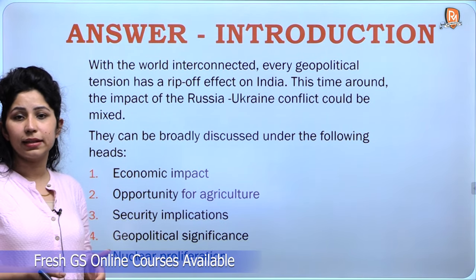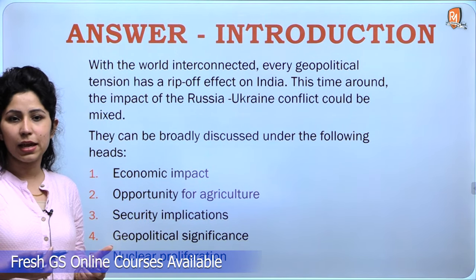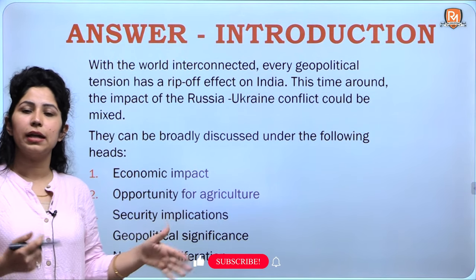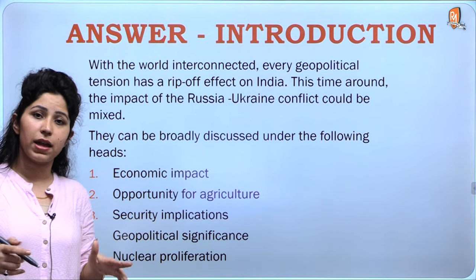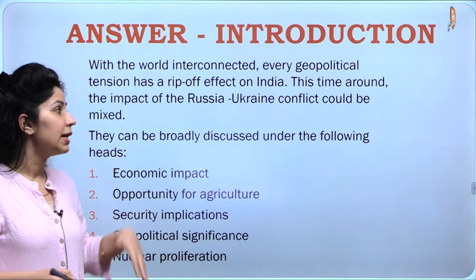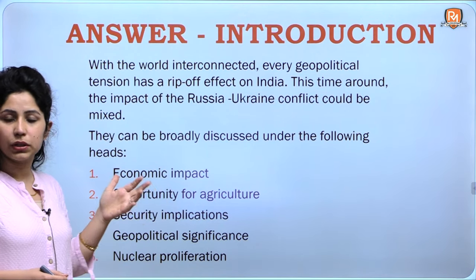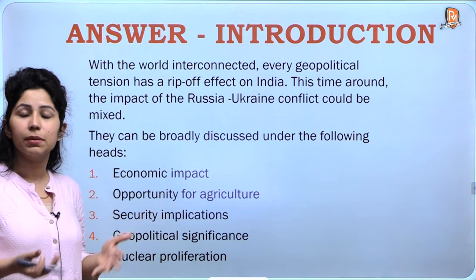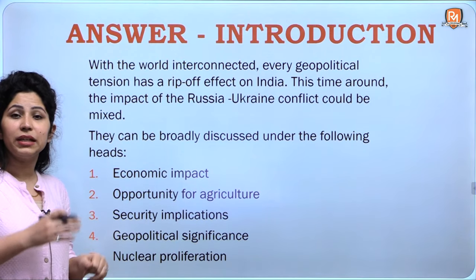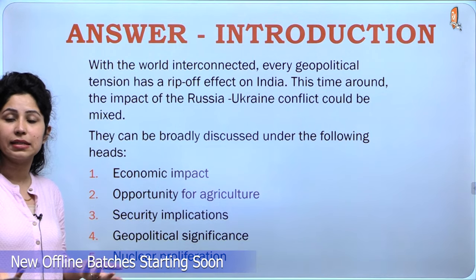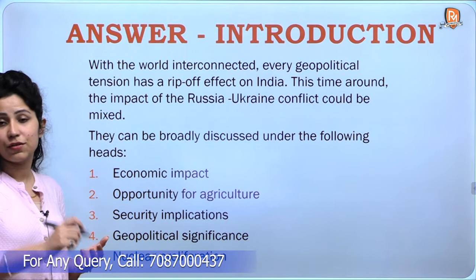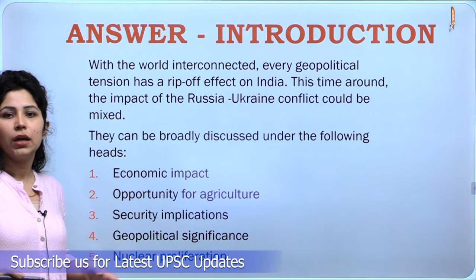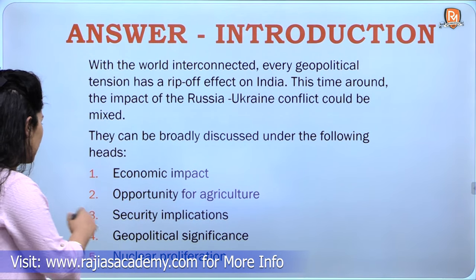With the world interconnected, every geopolitical tension has a ripple effect on India. This time around, the impact of the Russia-Ukraine conflict could be mixed. This line about the world being interconnected — the butterfly effect — has been very much in focus since the COVID-19 pandemic and again after the Russia-Ukraine conflict. The impacts can be broadly discussed under the following heads: economic opportunity for agriculture, security implications, geopolitical significance, and nuclear proliferation. We will start by discussing the economic impact and then move on to the others.